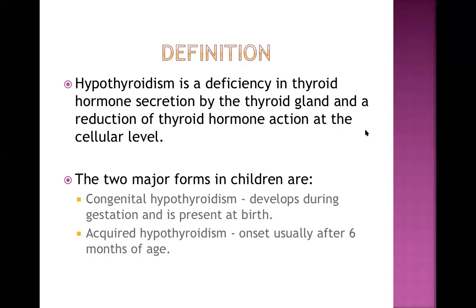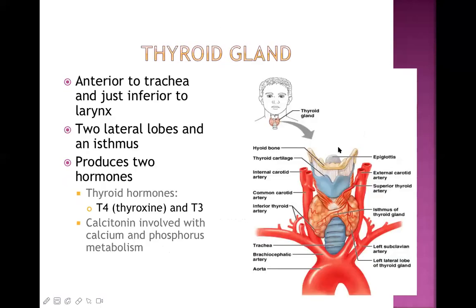There are two major forms of hypothyroidism in children: congenital and acquired. Congenital hypothyroidism develops during gestation and signs and symptoms are present right from birth. Acquired hypothyroidism has its onset usually after six months of age.